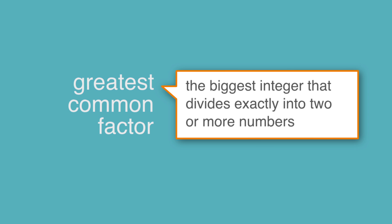The ACT might ask you to find the greatest common factor, which is the biggest integer that divides exactly into two or more numbers. Now, let's take a look at an example.